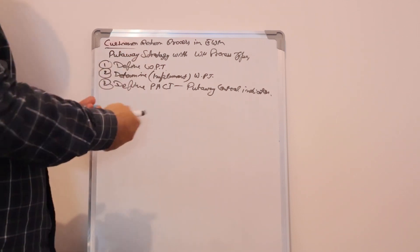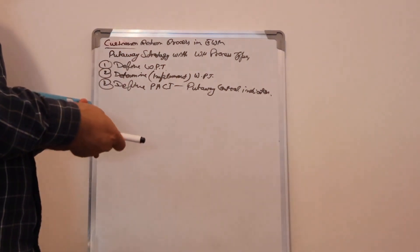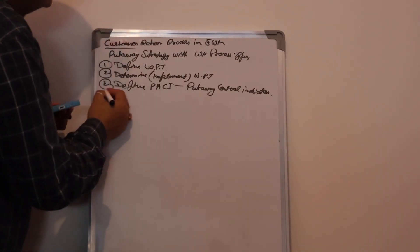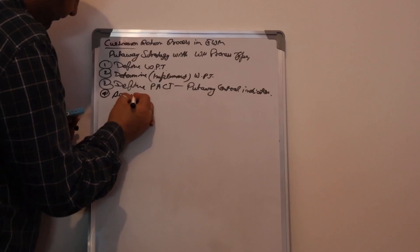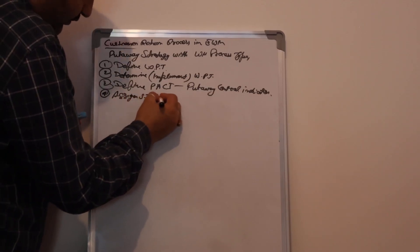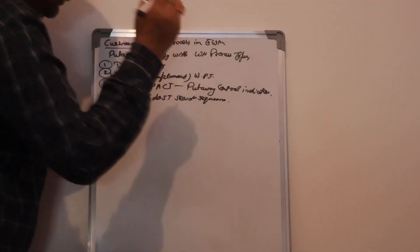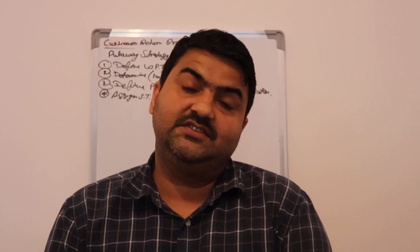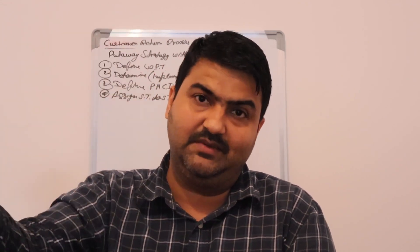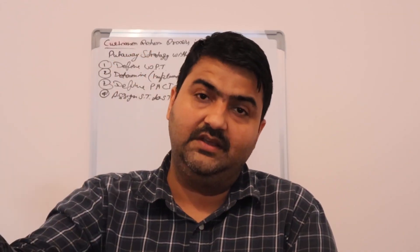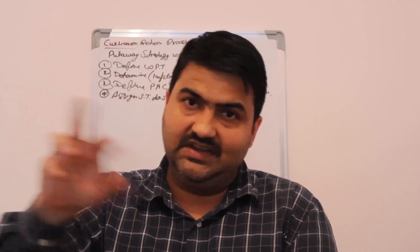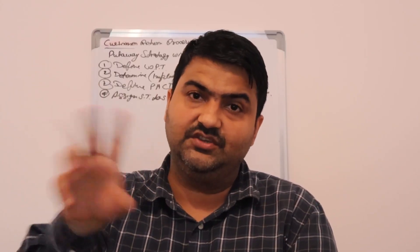That's why we need to define the path. Then fourth part: assign storage type to storage type search sequence. Why do we need to assign the storage type to the storage type search sequence? We need to tell the system which storage type we are going to put away to, because this is a rejected material by the customer. We need to assign and link the storage type to the storage type search sequence.